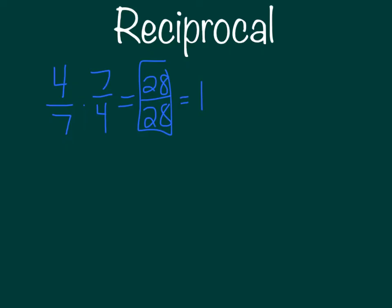It looks a little different when we have a whole number. What if our number was eight, and I wanted to know what's the reciprocal of eight? Well, you can't just flip it because it's not a fraction yet. But you could write it as a fraction — any whole number can be turned into a fraction by putting it over one, or dividing by one. Then you flip it. So eight over one times one-eighth equals one, meaning eight and one-eighth are reciprocals.